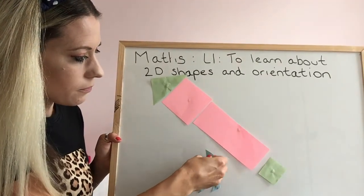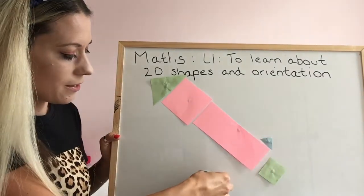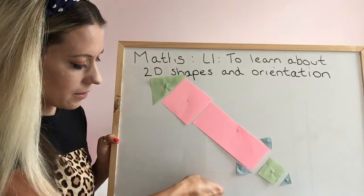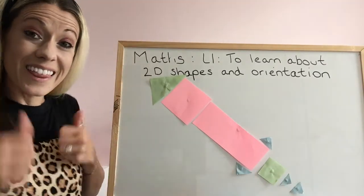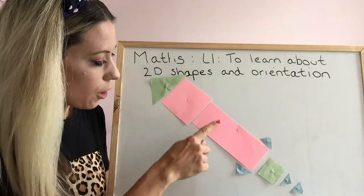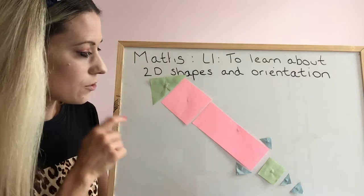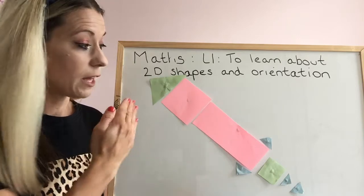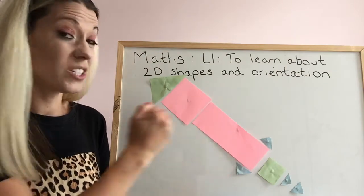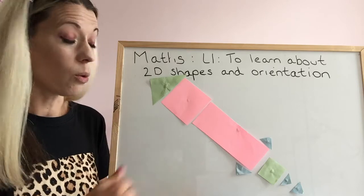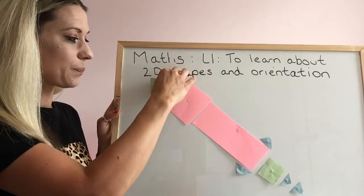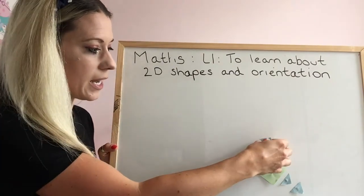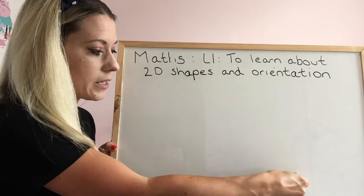Have you got any ideas? Can you shout out to me? I think some of you might have got it already. I used a rectangle, a square and different sized triangles to create a rocket. Can you see how I orientated them? They're not all positioned in the same way — I've orientated them all differently. What we're going to look at now is about orientating one shape to look like something else.